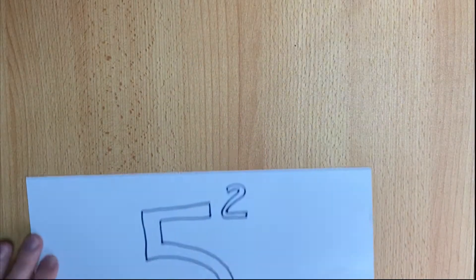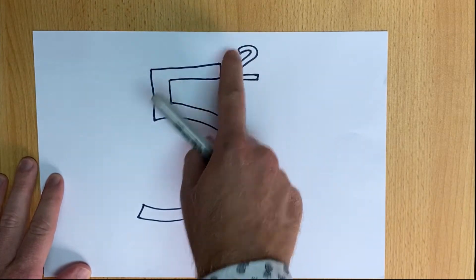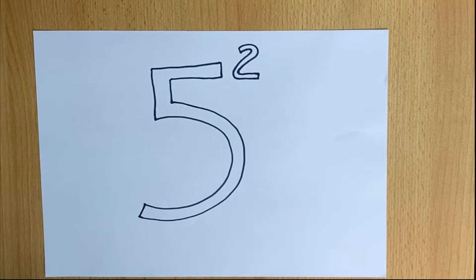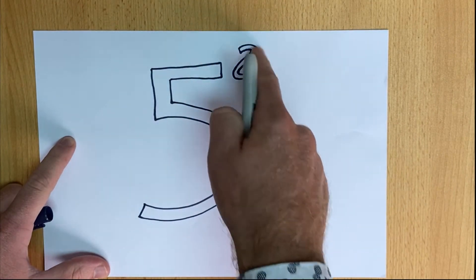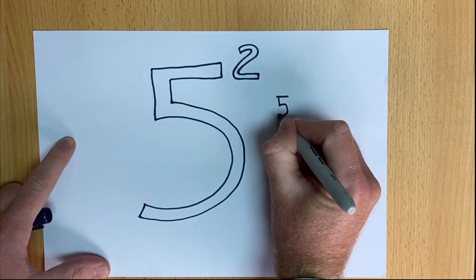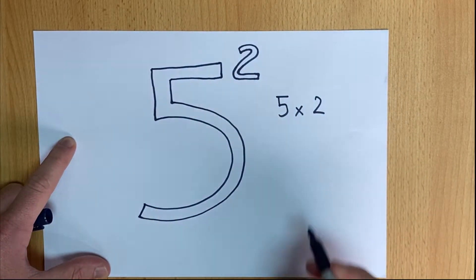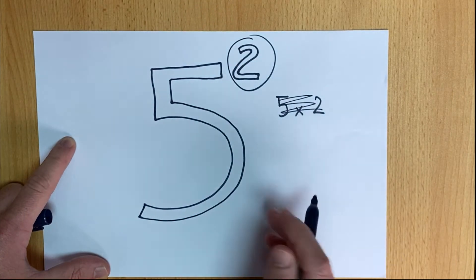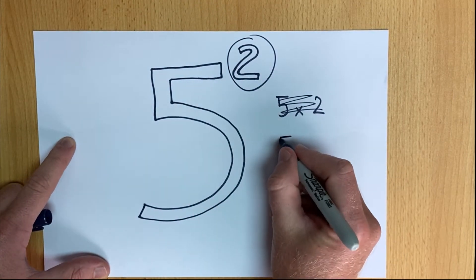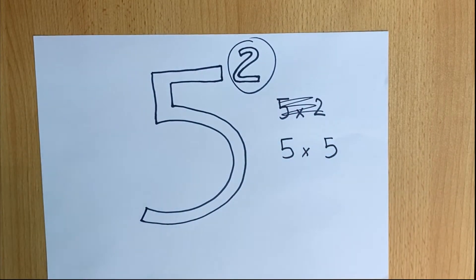So, have you ever seen a number that has a small two in the corner of it? Some people think that this small two means five times two, but actually what it means is squared. And what squared means is five multiplied by five. Allow me to explain some more.